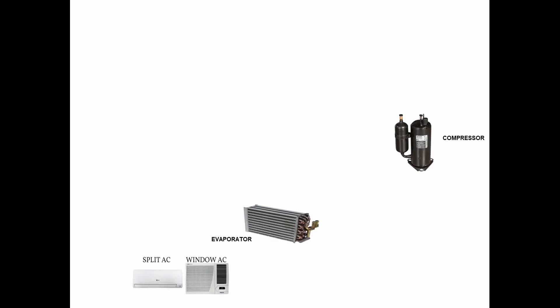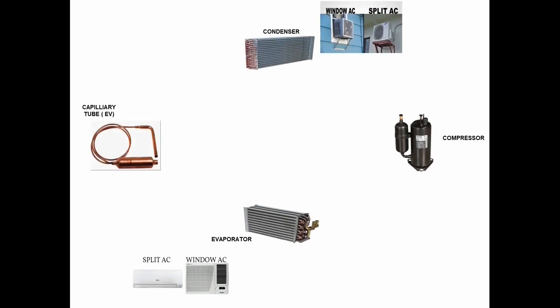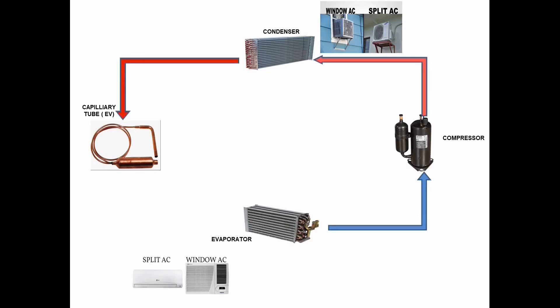Commonly, our cycle is composed of evaporator, compressor, condenser, and the expansion valve or capillary tube. The flow of our refrigerant in the cycle is from evaporator going to compressor, compressor going to condenser, condenser going to capillary tube, then capillary tube going to evaporator. And that's the flow of our cycle.